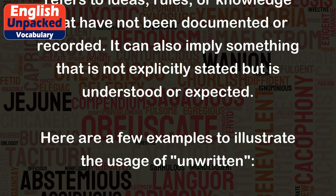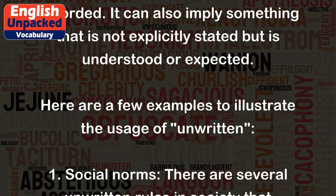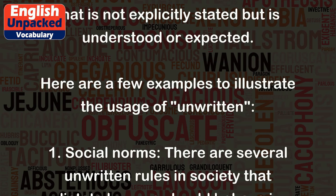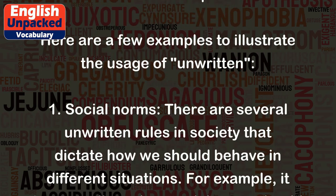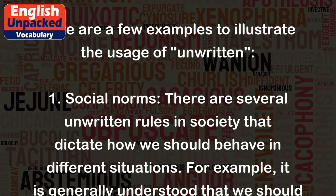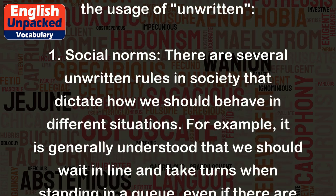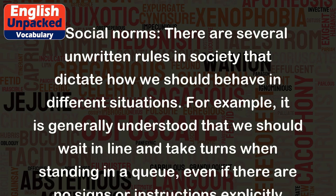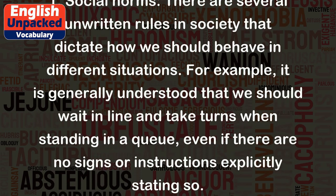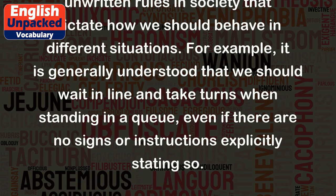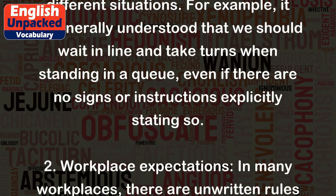Here are a few examples to illustrate the usage of unwritten. 1. Social norms: There are several unwritten rules in society that dictate how we should behave in different situations. For example, it is generally understood that we should wait in line and take turns when standing in a queue, even if there are no signs or instructions explicitly stating so.